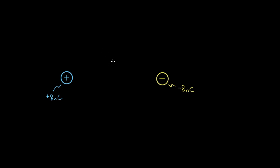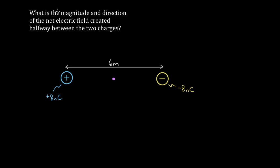Solving electric field problems gets significantly harder when there are multiple charges. Let's say the question is: what's the magnitude and direction of the net electric field — the total electric field — created halfway between two charges? You've got a positive eight nanocoulomb charge and a negative eight nanocoulomb charge, separated by six meters center to center. What's the total electric field they both create right there?